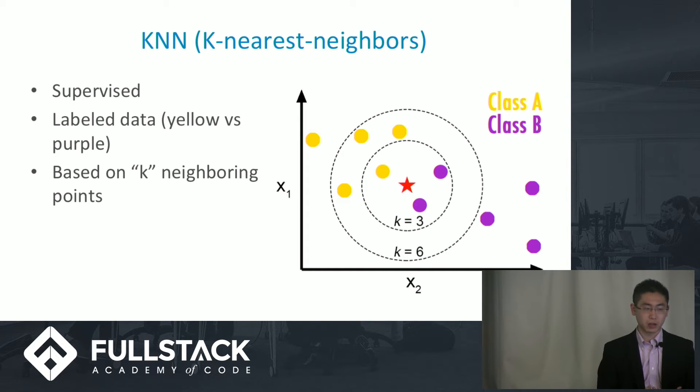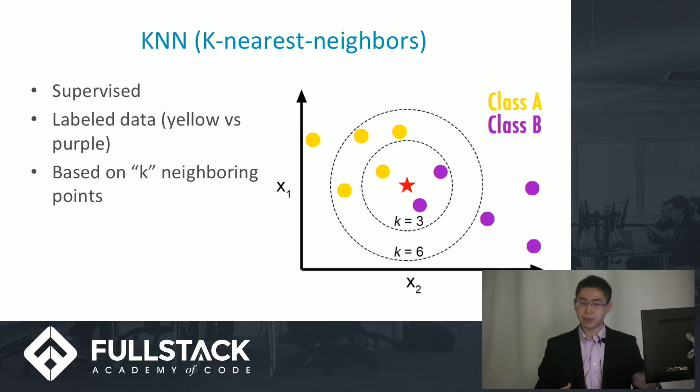However, if you expand that to six elements, now you have four yellow and two purple, which will render it as a yellow. So a lot of times it's how you train, is it over-training, is it under-training? What is the scope of what you are looking at? That's very important.